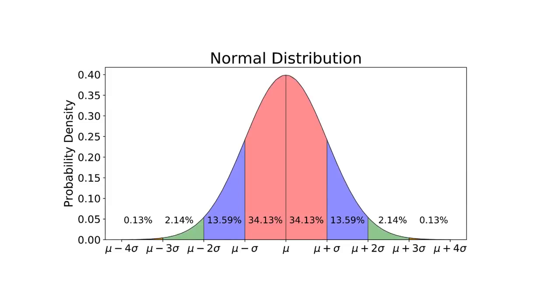This curve would become so famous that it would get the name normal. Normal means usual, typical, or expected. Because again and again, people would plot data and they would see the bell curve — it was to be expected, it was normal — and soon normality started to become an assumption for a whole bunch of data sets.